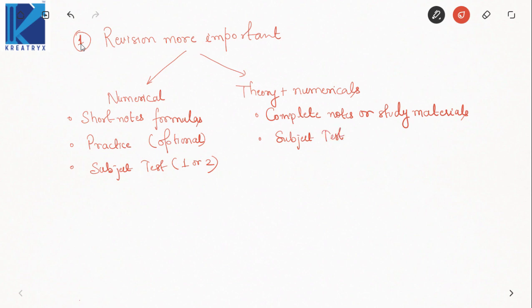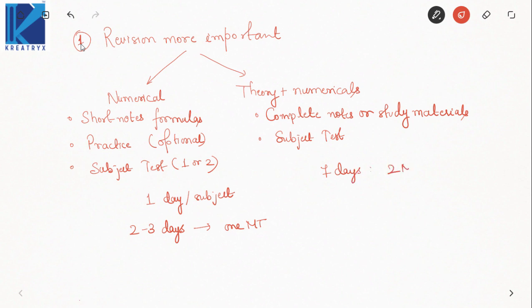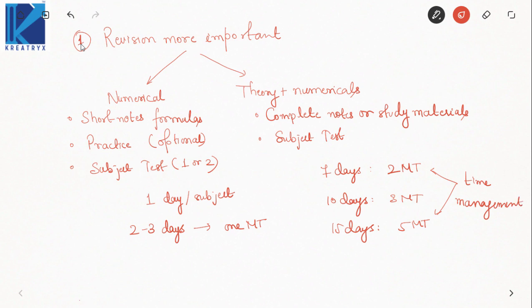You can dedicate one day per subject, and then in two to three days attempt one mock test. If you have only seven days, target two mock tests; in ten days, target three mock tests; and if fifteen days are available, target five mock tests. The frequency of mock tests should now be decreased. These mock tests are only for maintaining time management — how to manage that three-hour duration. Our main focus should be staying in touch with all concepts relevant to GATE and not forgetting any formulas.